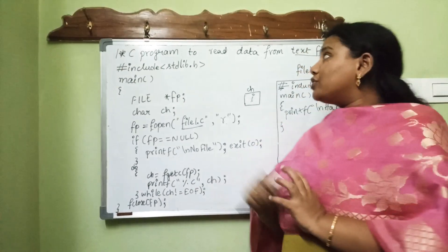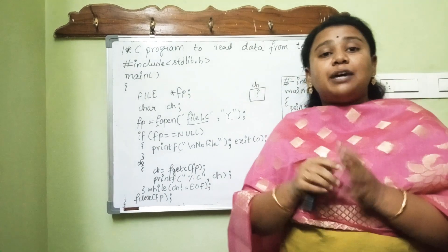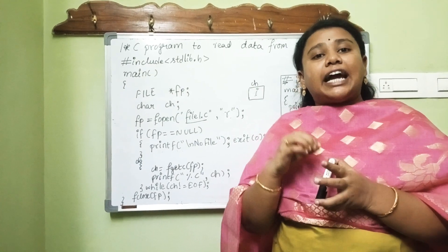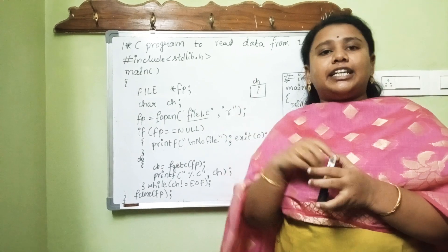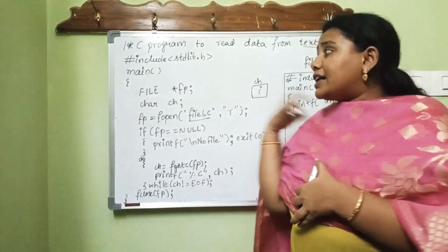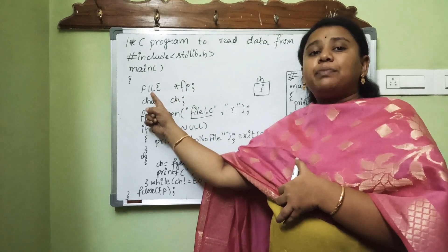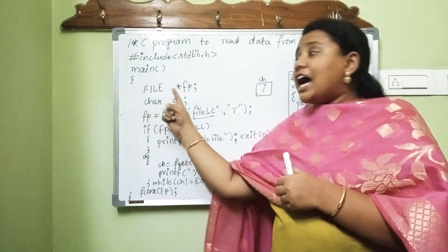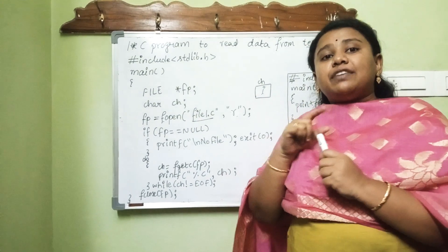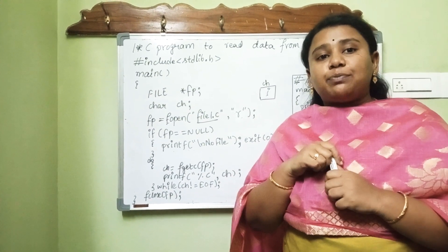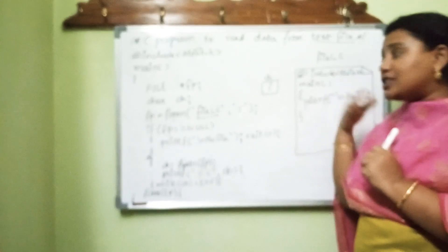In this session we are going to read data from a text file. In the previous example we entered some data into the file, and now we are going to read that data. As already discussed, we need a predefined data structure called FILE and we have to define a pointer for it. The previous program we used was file1.c and we are going to use that same program.